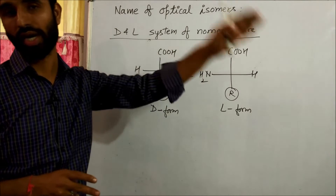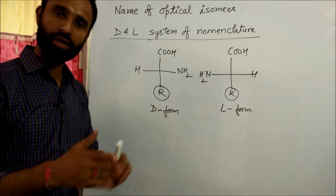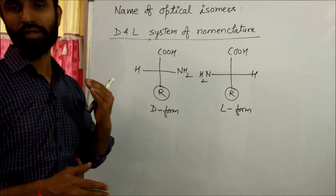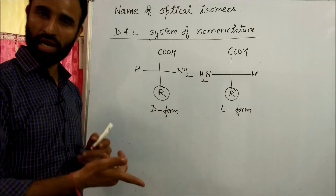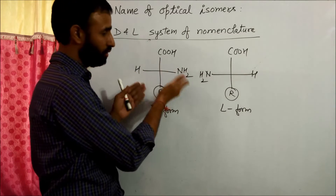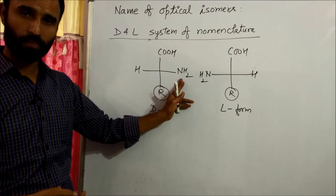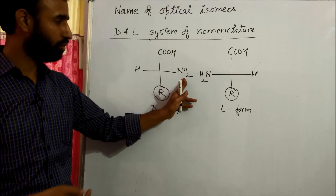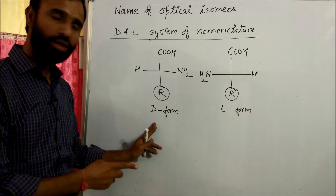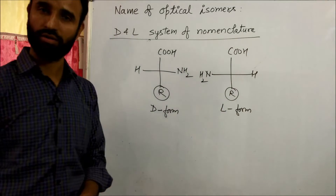Summary of D and L system of nomenclature: for sugars, if OH on the last carbon is on the right side, that is D; if on the left side, that is L. For alpha amino acids, it is the same — if NH2 is on the right side, that is D; if NH2 is on the left side, that is L.